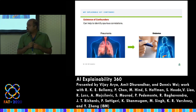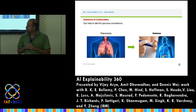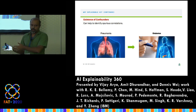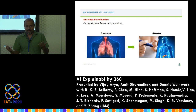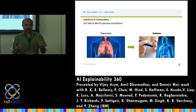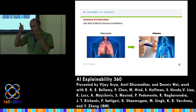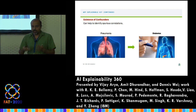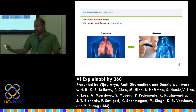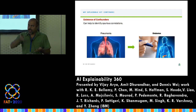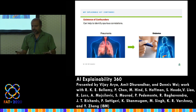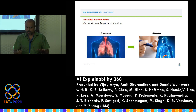Another example related to causality: with healthcare data, a high-accuracy model was saying that if you have pneumonia you won't have diabetes. The reason was that people with pneumonia get tested for many diseases, including diabetes, and most didn't have it — creating a strong negative correlation in the data. A model trained on this data was just picking up on these artifacts. This is another motivation for interpretable models: to catch spurious correlations.